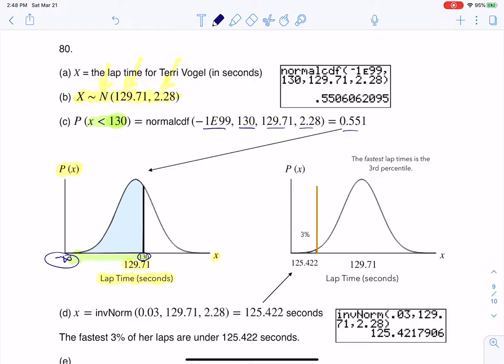I plug that in, and I get about 55%, and that number matches the area I've shaded, right? Because probability is always area under a curve.